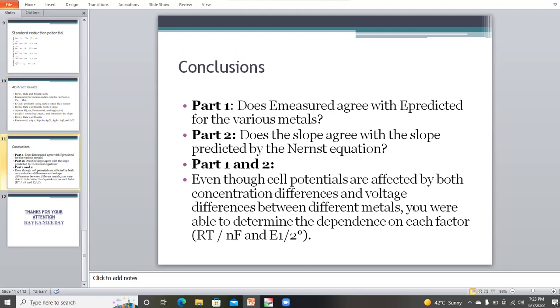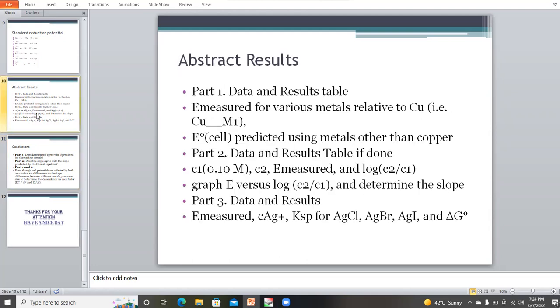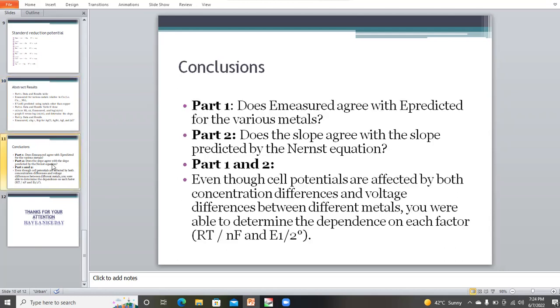This is the conclusion. Does the measured values agree with the predicted values for the various metals? Yes. Does the slope agree with the slope predicted by the Nernst equation? The slope that we calculate from this method predicted by the Nernst equation is good. Even though the cell potentials are affected by both concentration differences and voltage differences between different metals, you were able to determine the dependence on each factor.